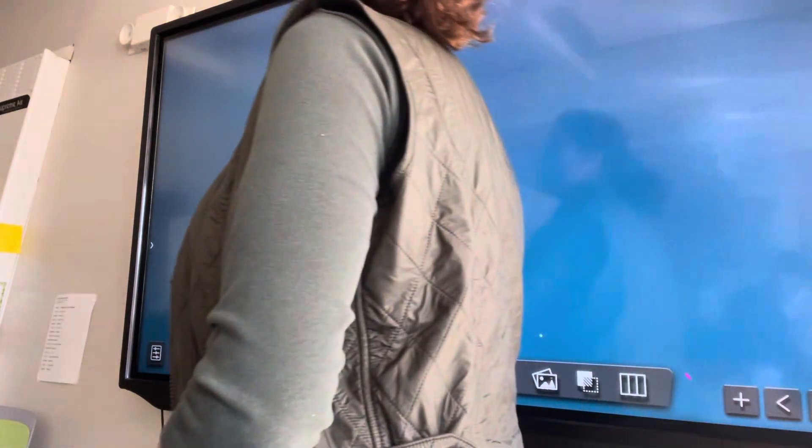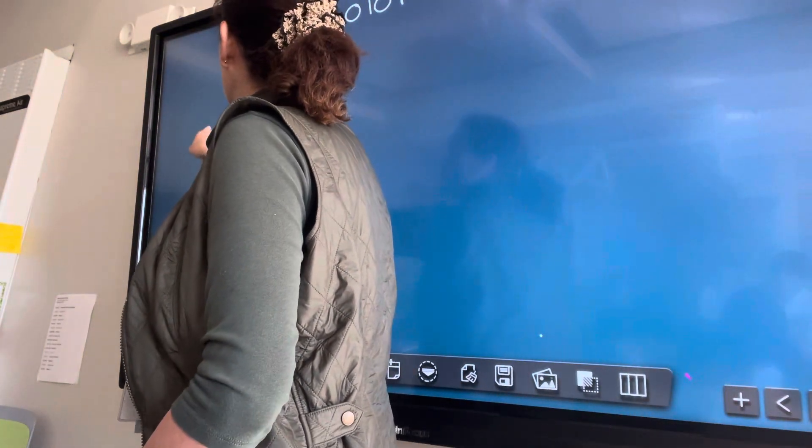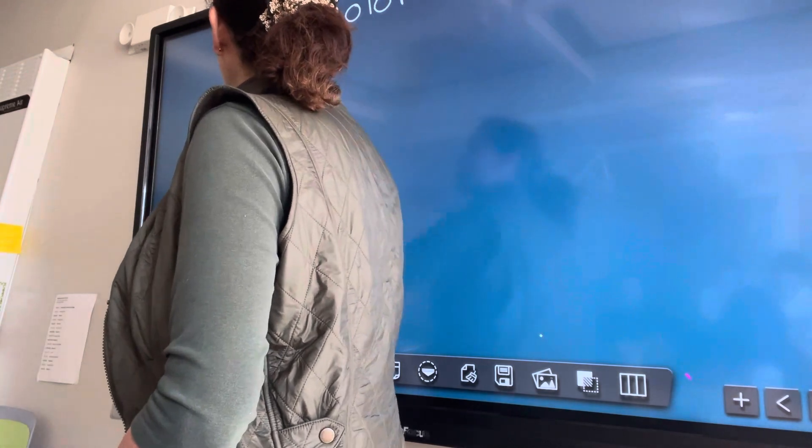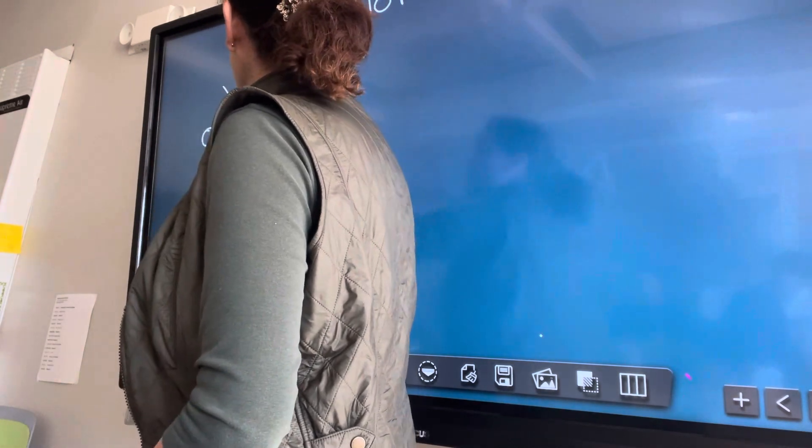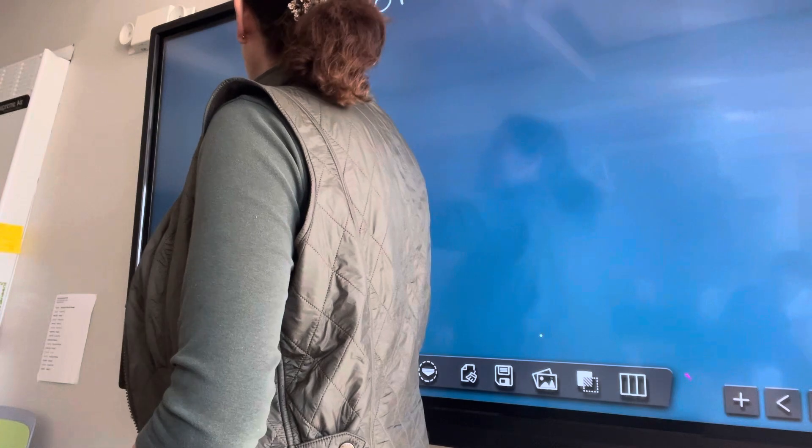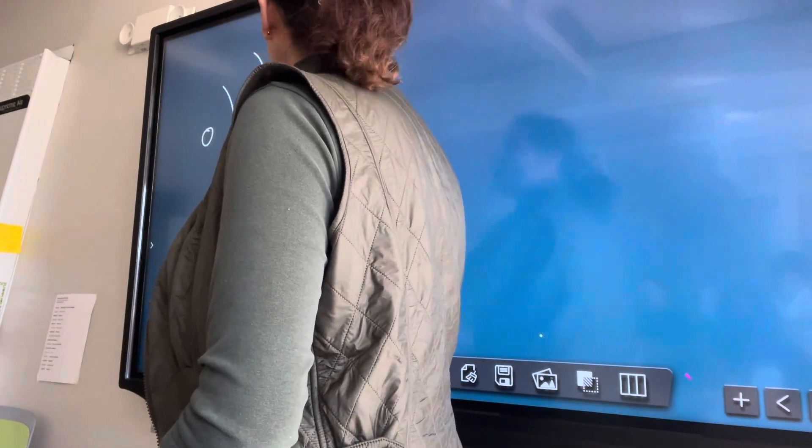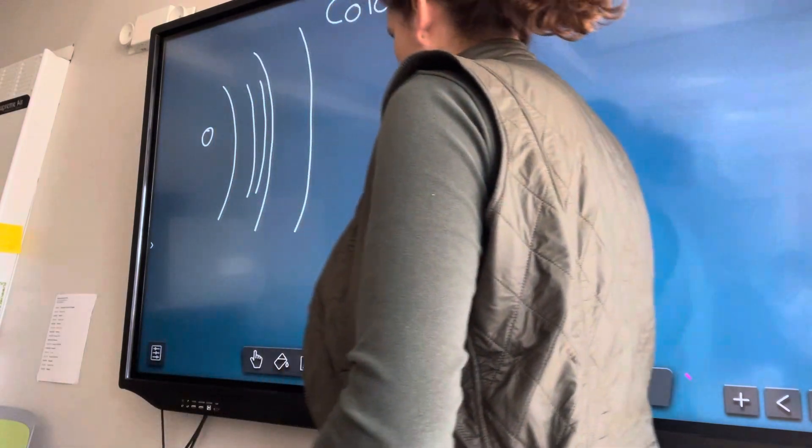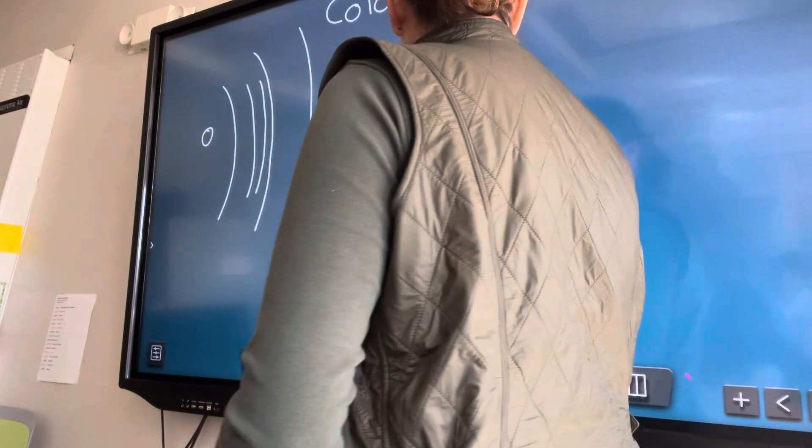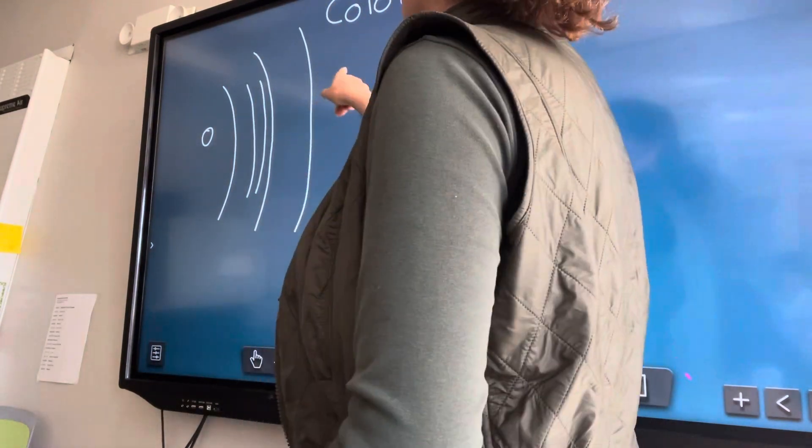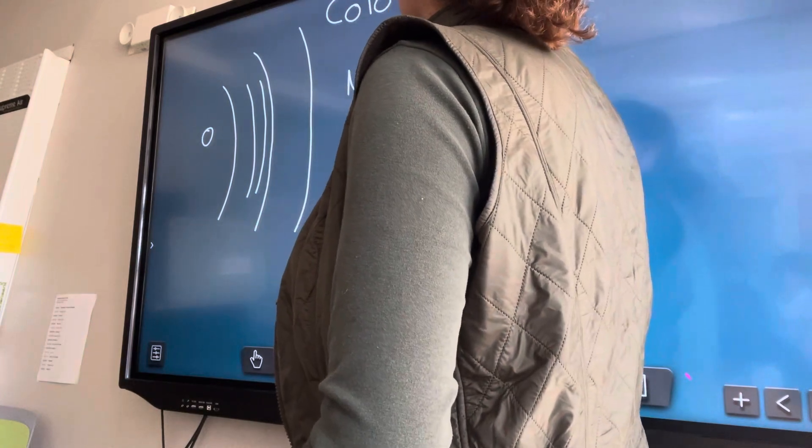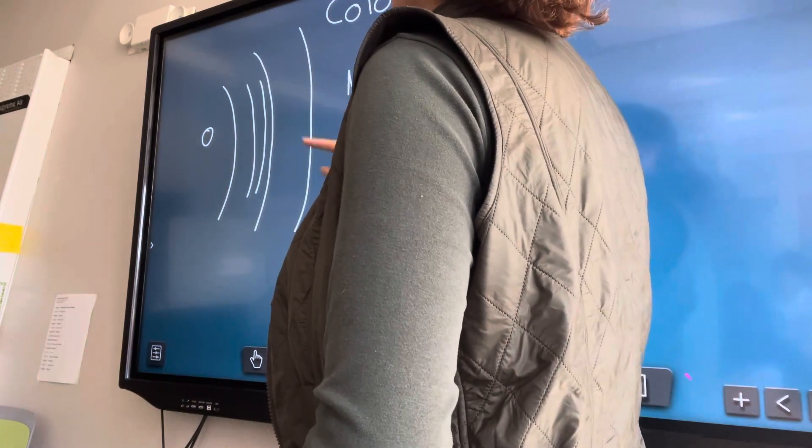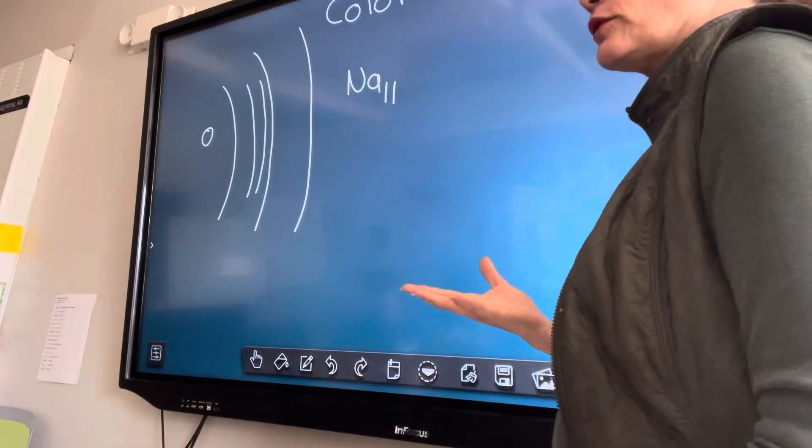Colleen was talking about how atoms have different shells and subshells and orbitals within those subshells, as we have talked about before. And sometimes the one that I know by heart is the one for sodium. If the atom is sodium, it has 11 protons and 11 electrons, right?